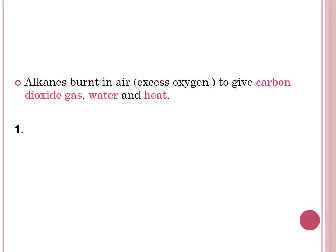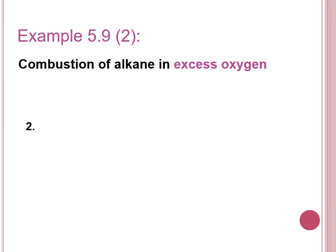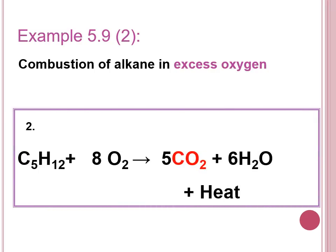When alkanes are burned in excess oxygen, carbon dioxide, water, and heat are produced. For butane in excess oxygen, we use 13/2 O2 to produce 4 CO2 and 5 H2O with heat. For pentane in excess oxygen, 8 O2 molecules are used to produce 5 CO2 and 6 H2O with heat.